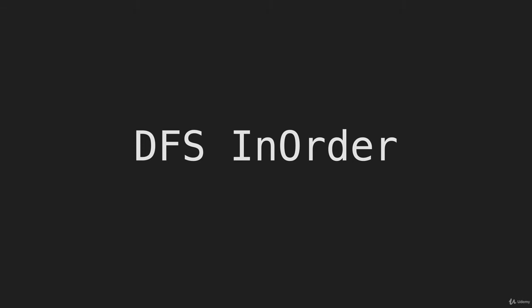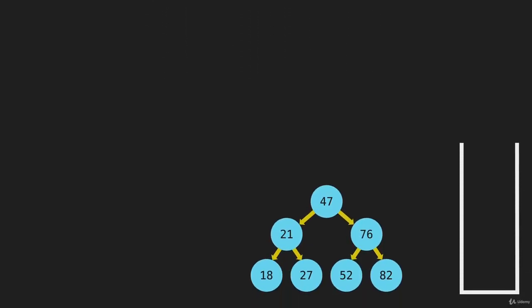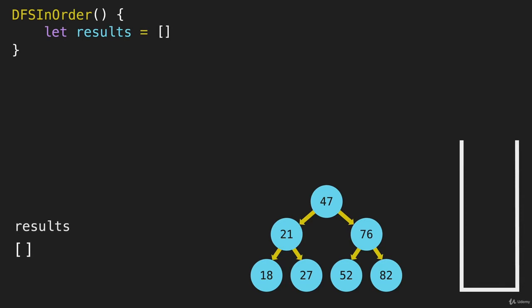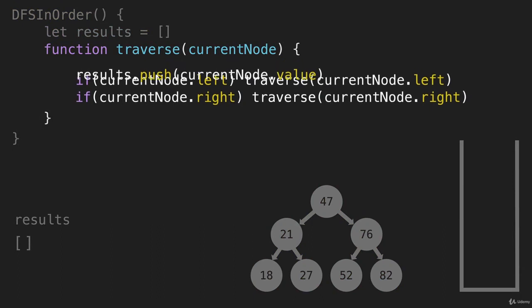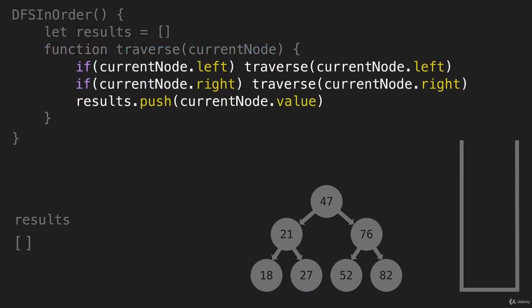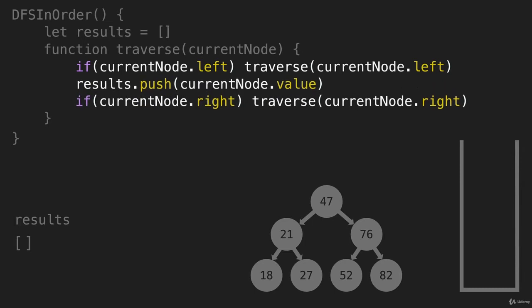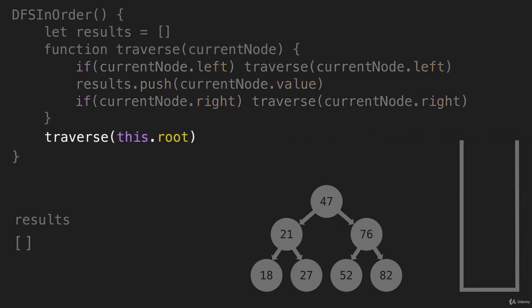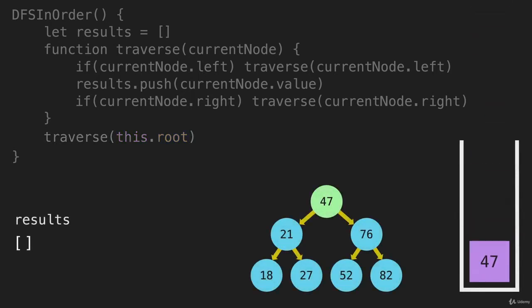Let's code depth-first search in order. Just like we did before, I'm going to bring up our tree and our call stack, and we'll start coding DFS in order. We're going to have a results array. I'll bring in the function we used for pre-order — this is what it looked like for post-order, and this is what it looks like for in-order. It's all the same code, just written in a different order. Then I'll call this function with the root, which puts that on the call stack.